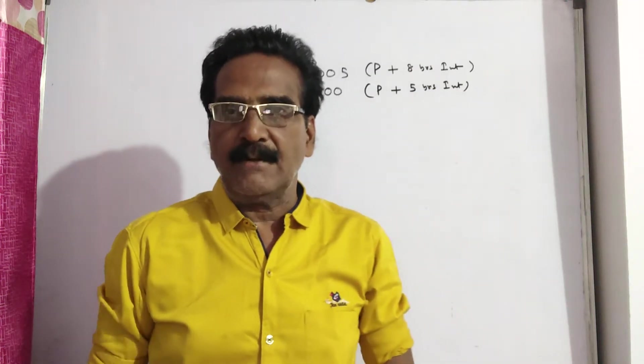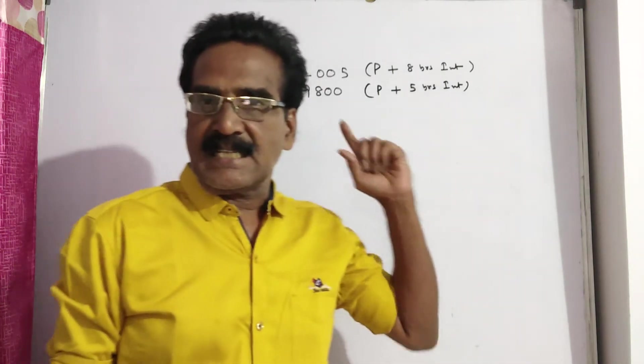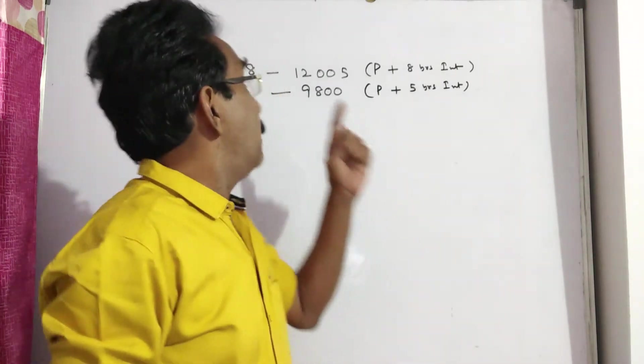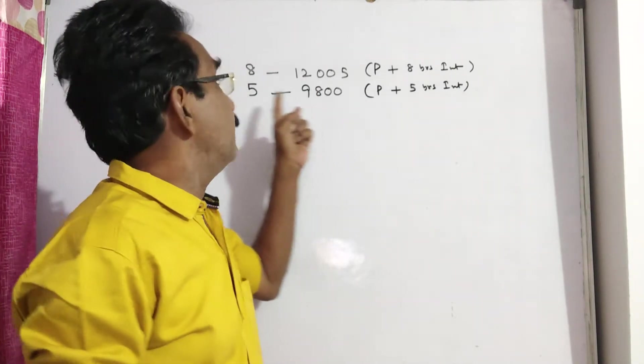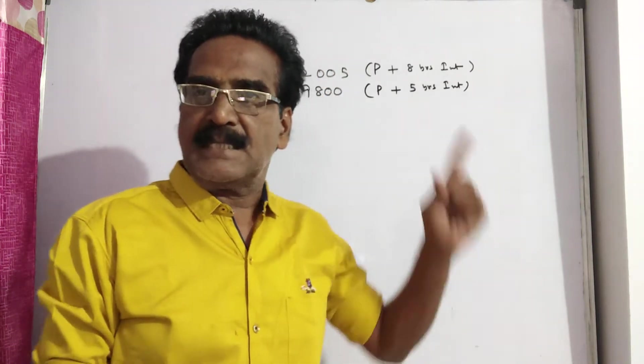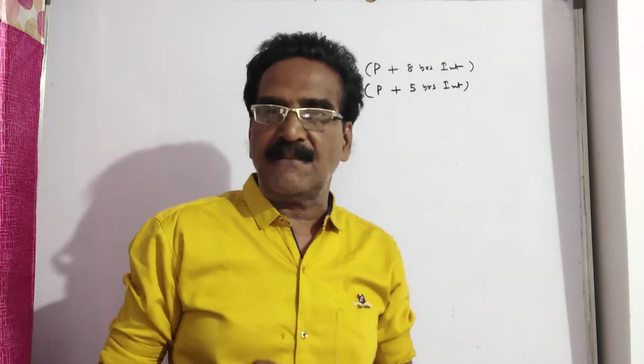Hi friends, good morning. Please look at the next problem in simple interest. See friends, a certain sum amounts to 9800 rupees in 5 years and 12,005 rupees in 8 years at the same rate of interest. Then what is the rate of interest?